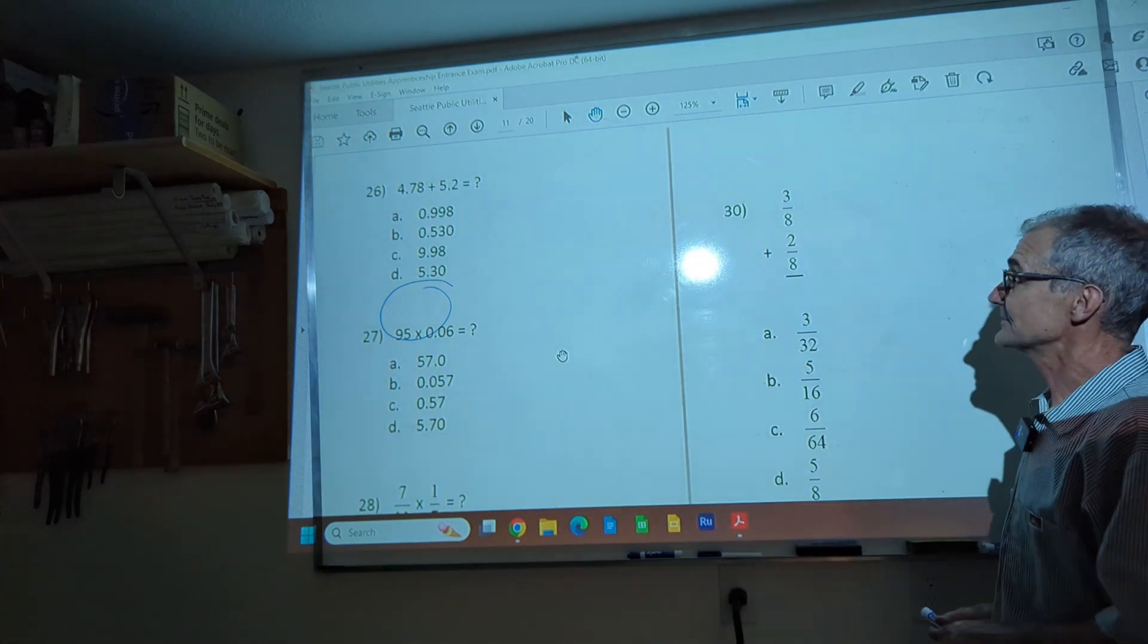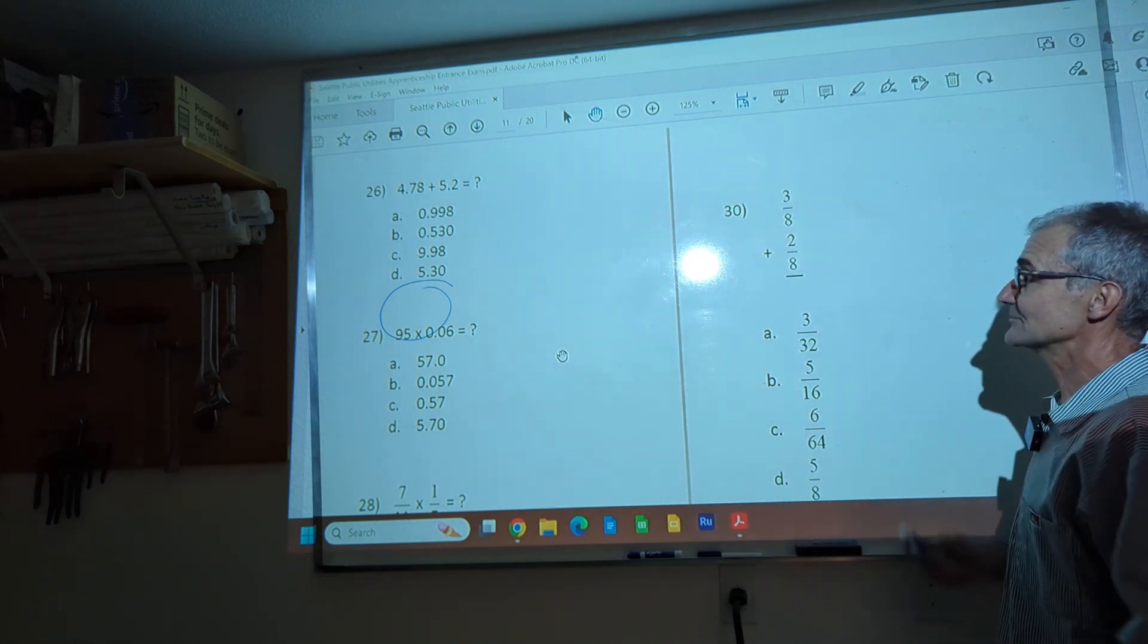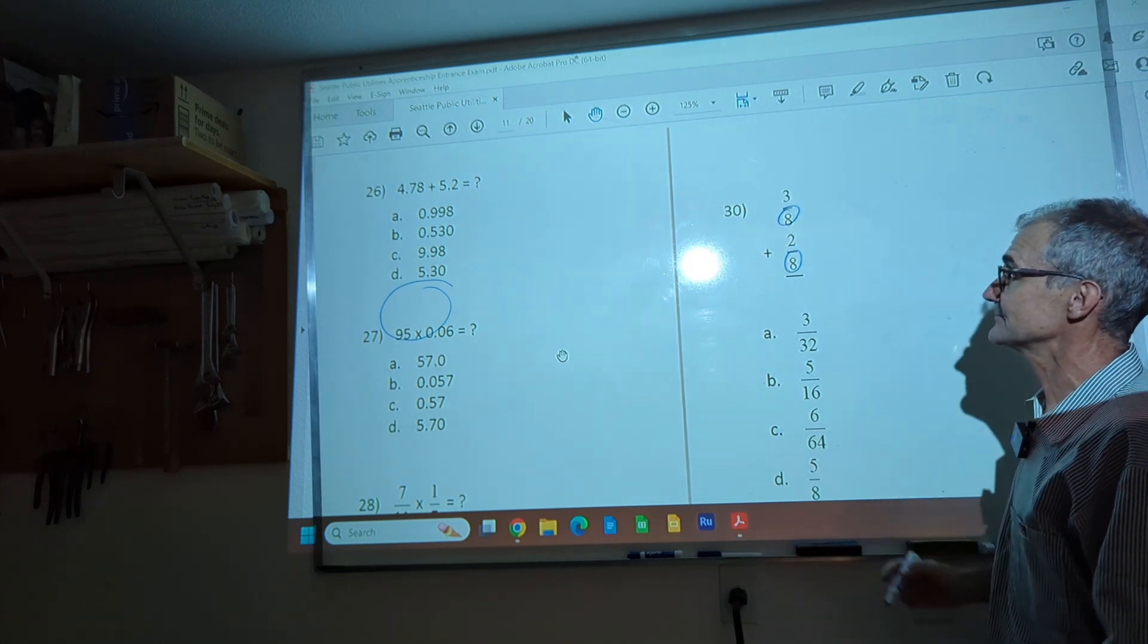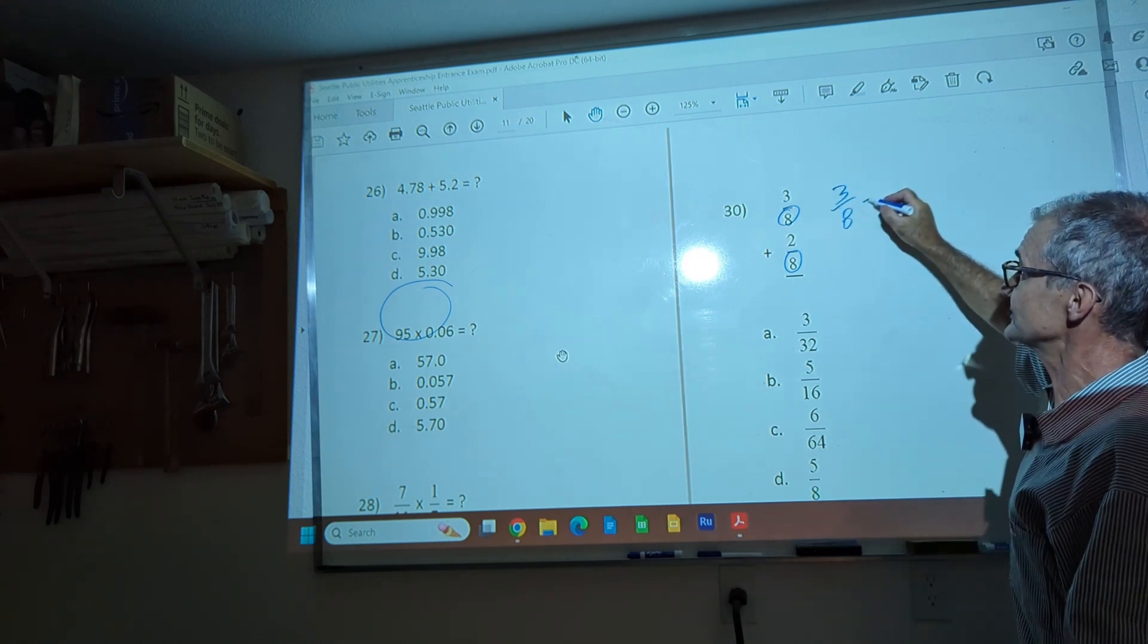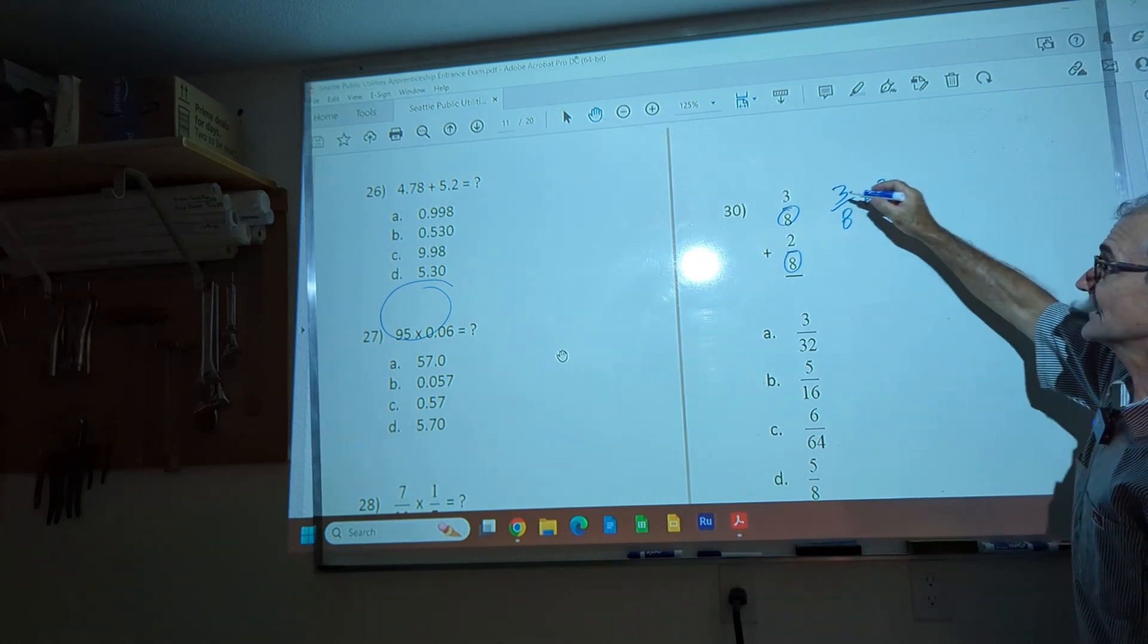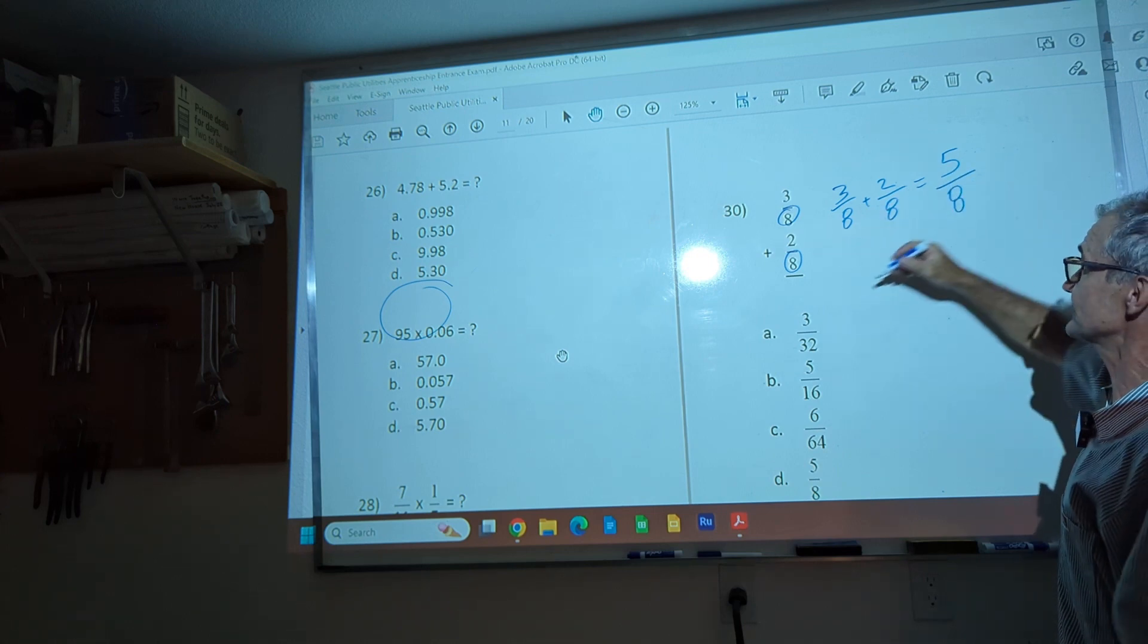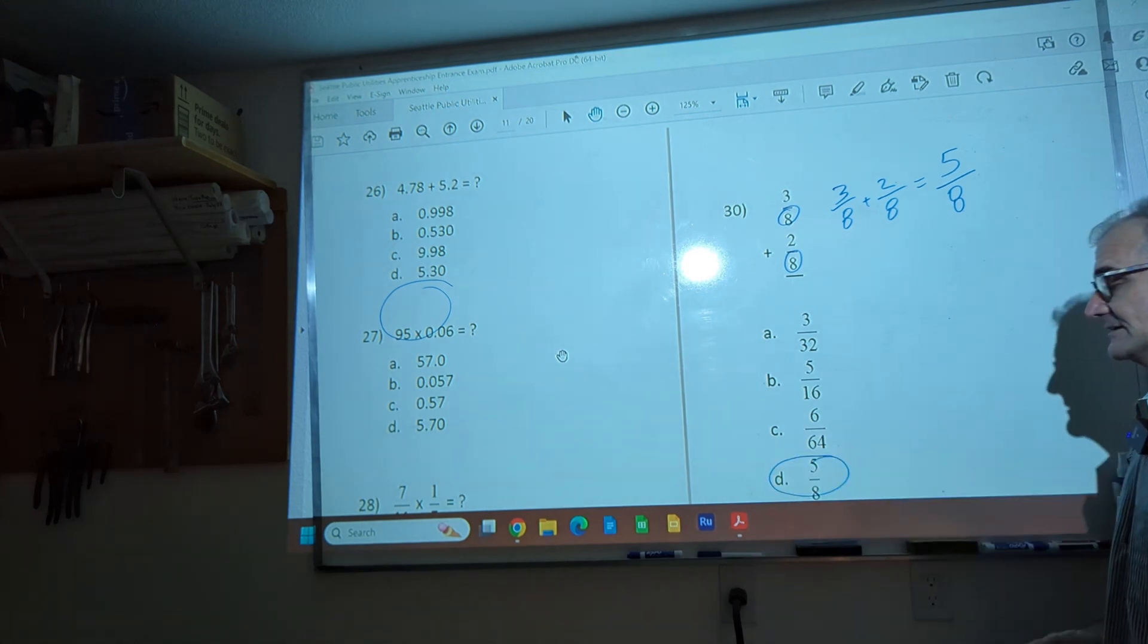Problem 30 over here. We're adding fractions now. Remember multiplying was a little bit easier than adding. The key on adding fractions is they have to have a common denominator. That bottom number has to be the same and in this case it is. So I have 3/8. All I'm doing is rewriting it plus 2/8. That bottom number is the same. I add across the top to get 5 and then I keep the bottom number. So 3/8 plus 2/8 is 5/8. That's your answer right there. Answer D here.